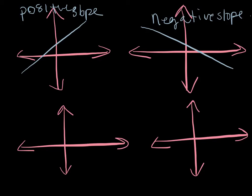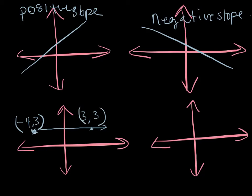Now let's look at a couple of special situations. For a line that goes straight across — for example, if one point is labeled negative 4 comma 3 and another is 3 comma 3 — notice the y values are both 3. In our slope formula we get 3 minus 3 over 3 minus negative 4, which gives us 0 on top. No matter what ends up in the denominator — in this case 7 — we get a slope of 0.